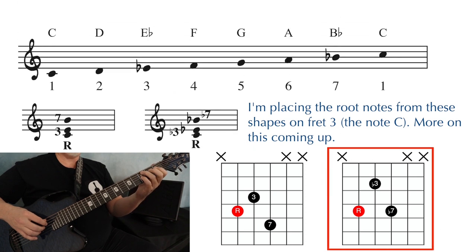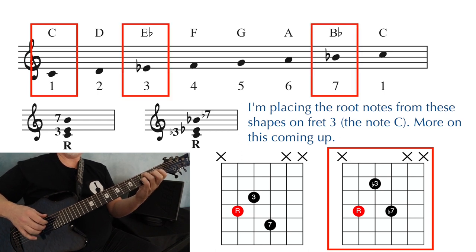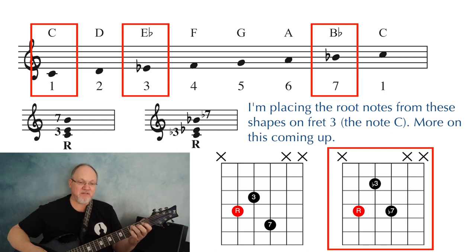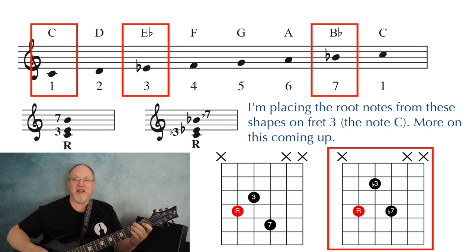Here's a C minor seven chord. This chord also has a root — the C — a flat three, the E flat, and a flat seven, the B flat. The E from the C major scale has been flatted and the B has also been flatted. That's why sometimes you'll see flat or sharp in the fretboard labels.